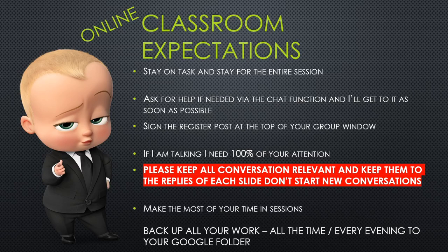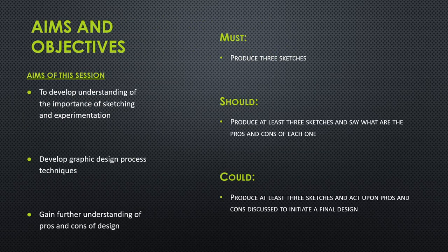Today we're going to be developing an understanding of the importance of sketching and experimentation — why do we sketch, why do we experiment. We're also going to be developing the graphic design process techniques and gaining further understanding of pros and cons of design. Today you must produce at least three sketches and say what the pros and cons of each one are — that's annotation. You could also act upon the pros and cons to initiate a final design.